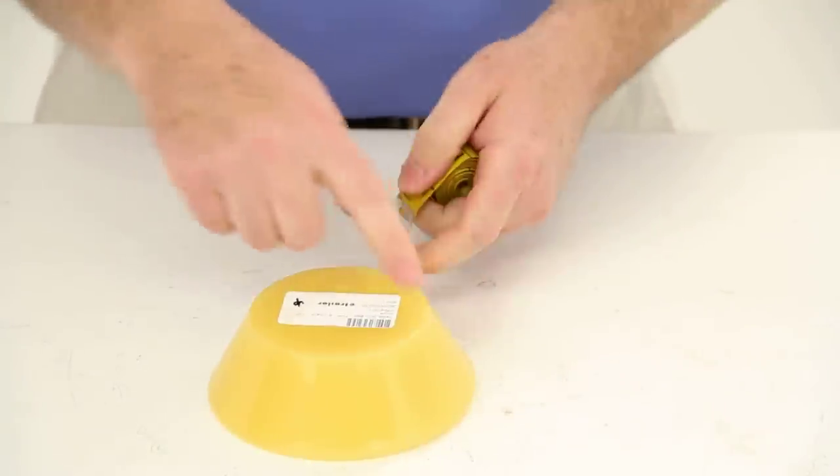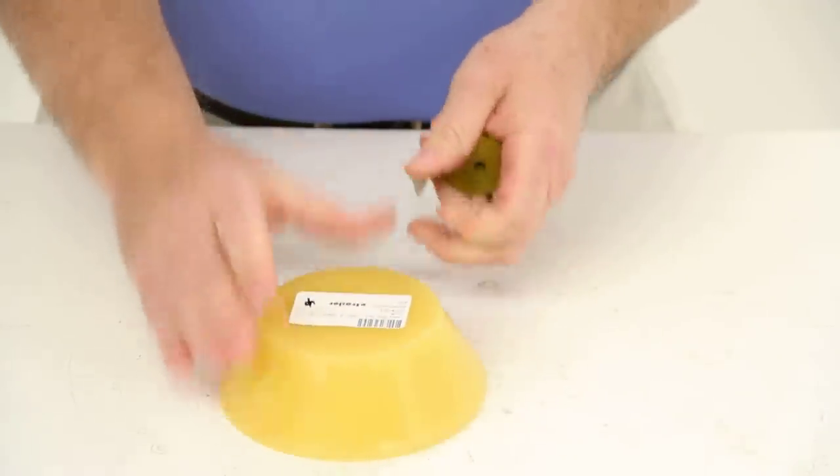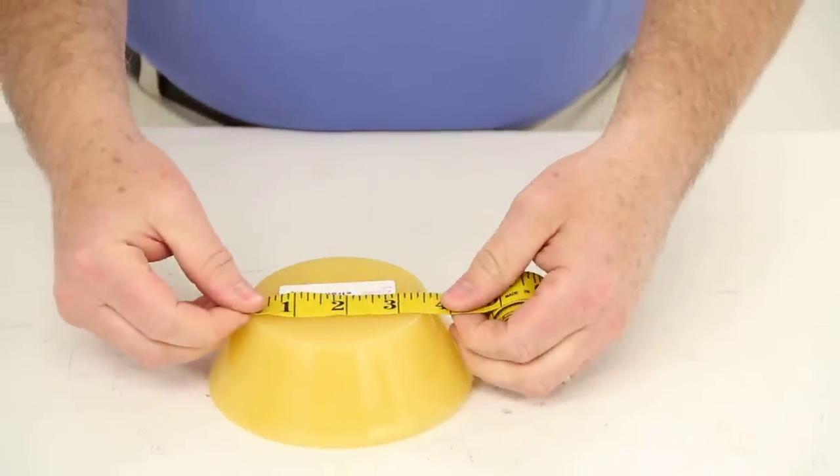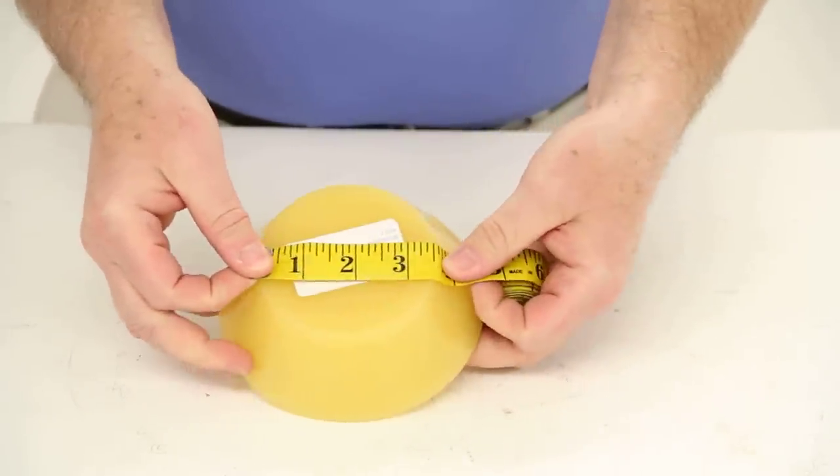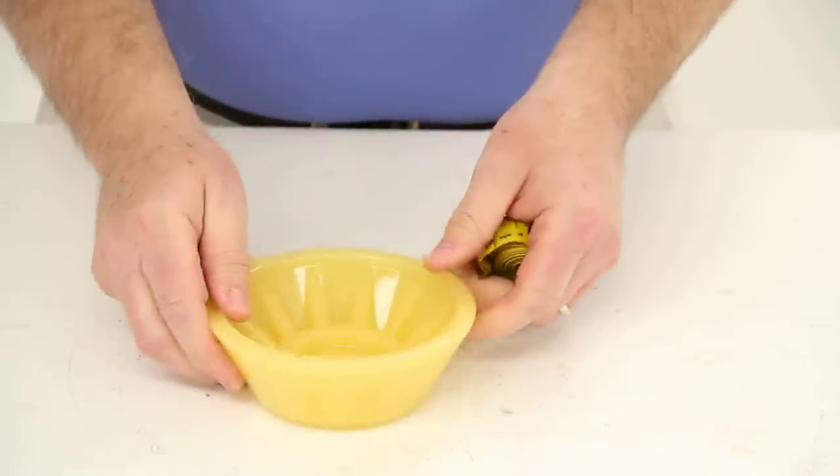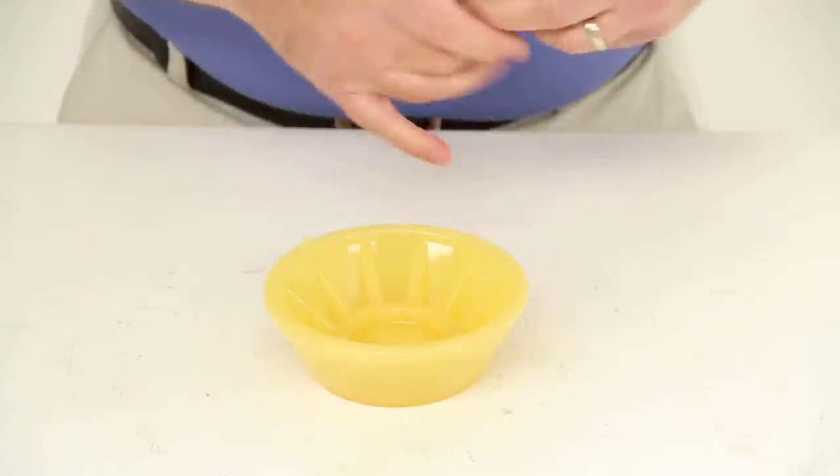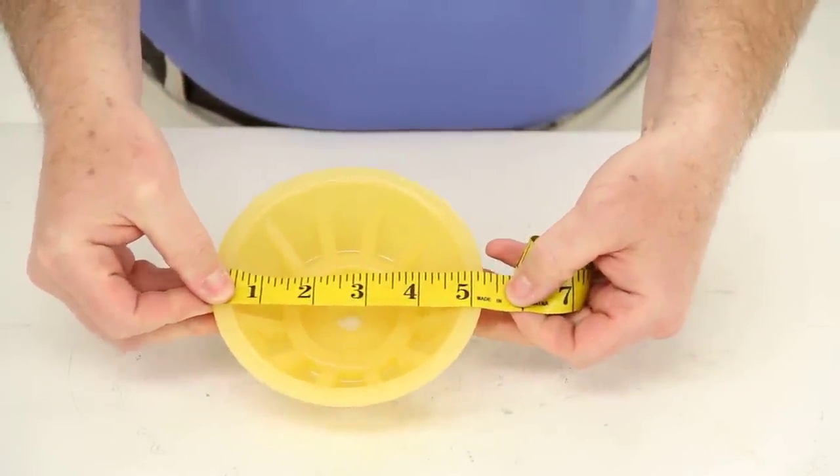We're going to measure the diameter at the attachment point where this attaches to the bow roller, and that will be three and a half inches. And then the diameter of the widest point will be five and a quarter inches.